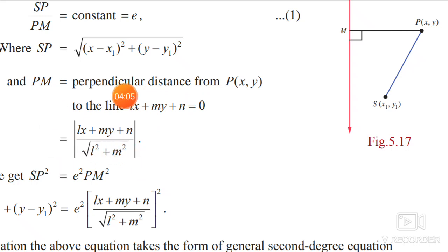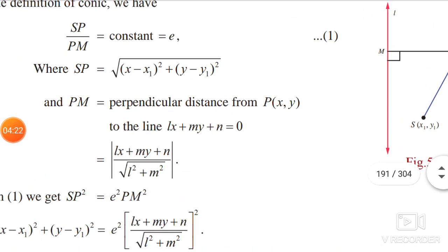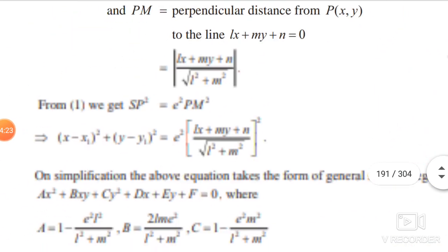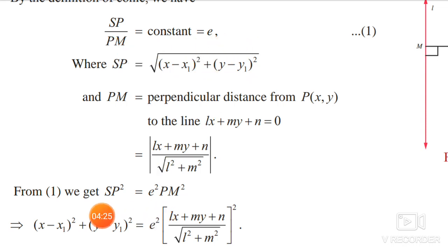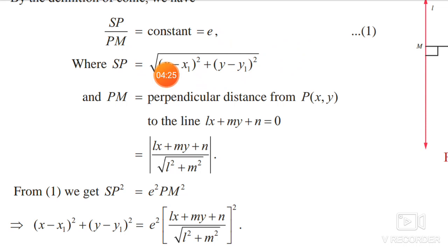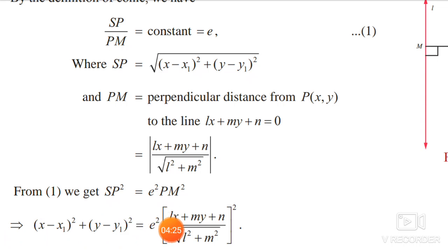The modulus is used because this is a distance, so negative values become positive. Now, to derive the equation of the conic, let's square both sides. SP by PM equals e, so SP equals e times PM. Squaring gives SP² equals e² times PM². Since SP involves a square root, squaring removes it, giving (x minus x₁)² plus (y minus y₁)² equals e² times PM².